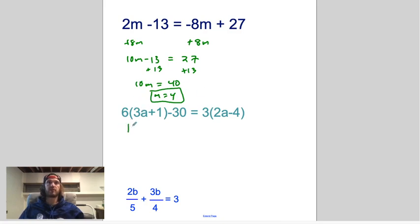We're going to distribute. 6 times 3 gives us 18a plus 6 minus 30. Distributing here is 6a minus 3 times 4 is 12. Okay, let's simplify the left and the right first. So I'm going to write this as 18a plus 6 minus 30 gives us negative 24. Here I have 6a minus 12. Let's go ahead and get these two a terms together on the left hand side, which means I'm going to take the one on the right and do the opposite of its sign.